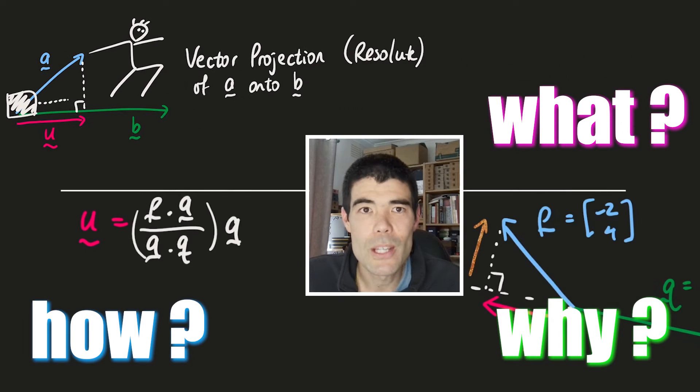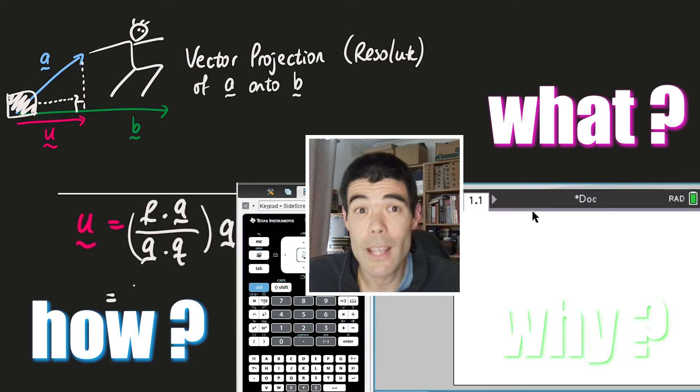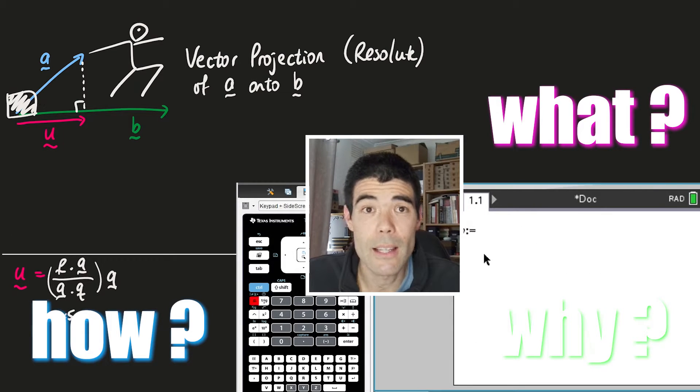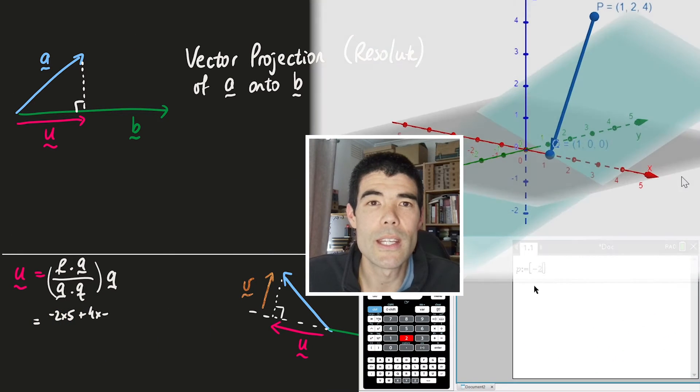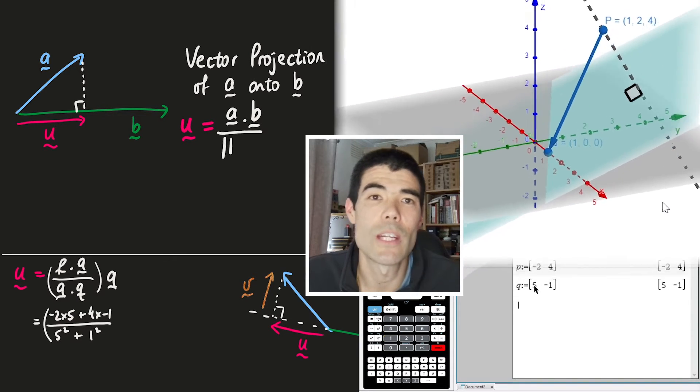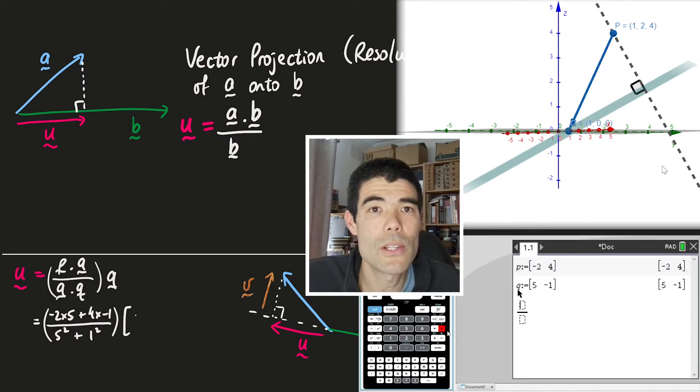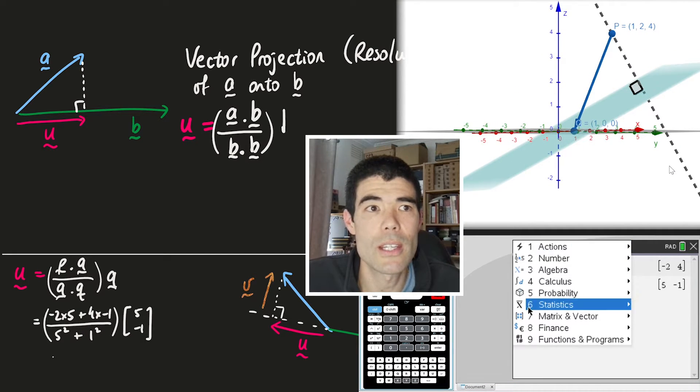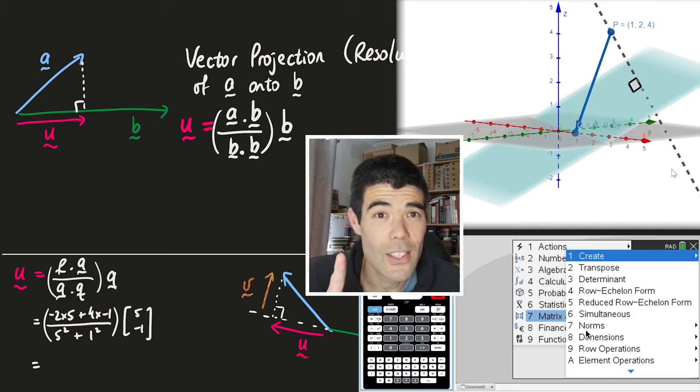We'll look at a simple two-dimensional example, look at how to calculate it on the CAS calculator, and then look at some really nice 3D examples where we find the distance from a point to a plane and the distance between two skewed lines in three dimensions. I'll put some chapters in the video so you can cut to whichever bit you're interested in. Let's do it.